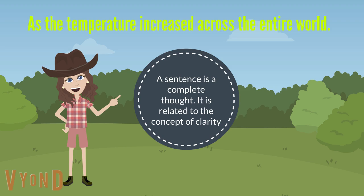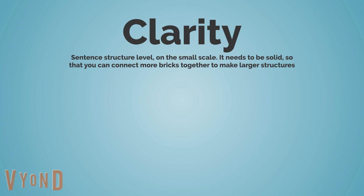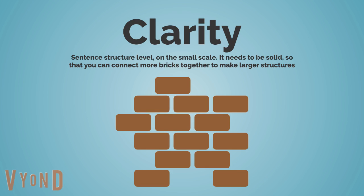So let's make sure we understand the three concepts that this module focuses on. First, clarity. This happens on the sentence structure level — on the small scale. Imagine a sentence as a brick: it needs to be solid, not brittle, so that you can connect more bricks together to make larger structures.